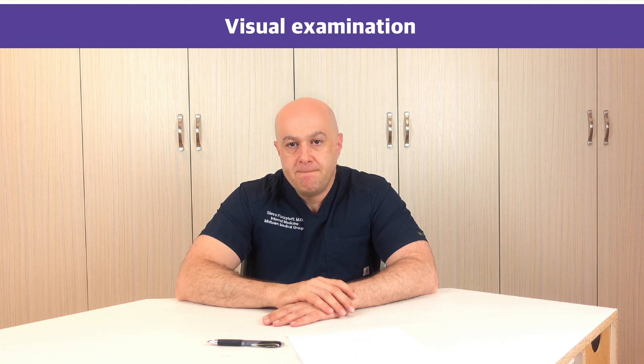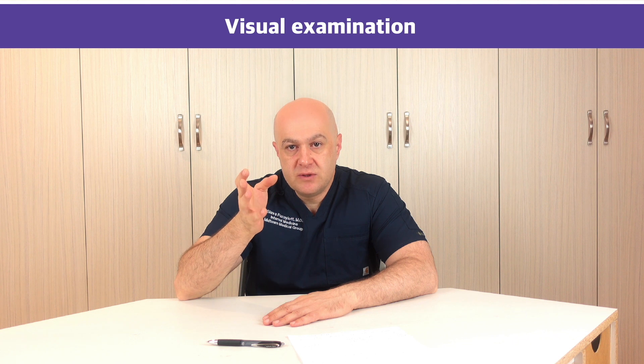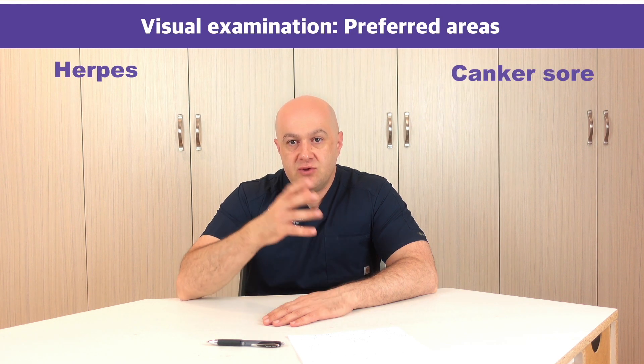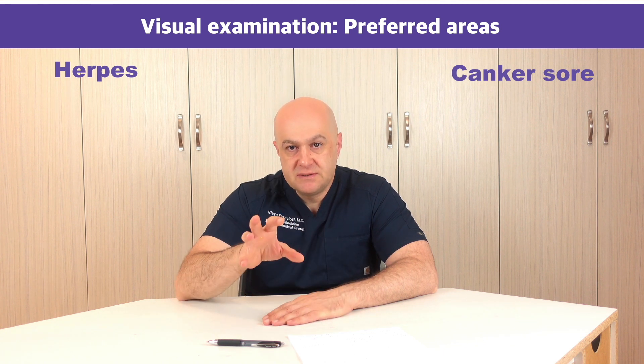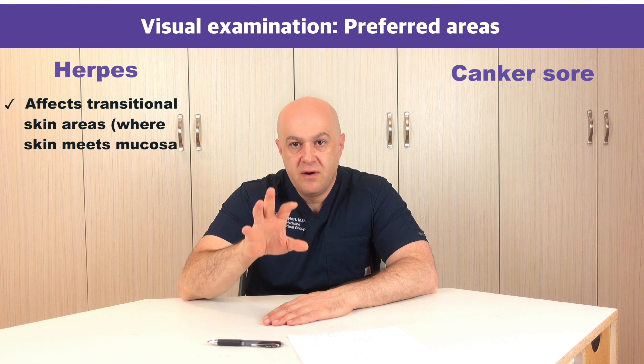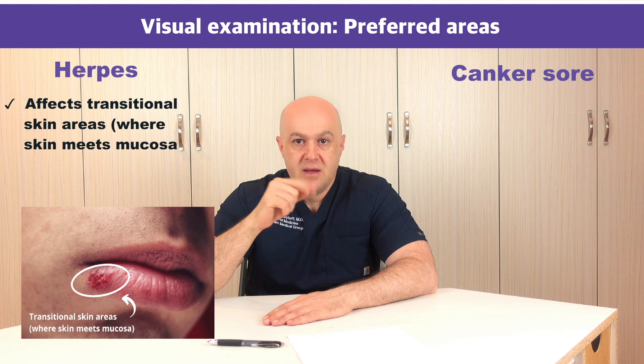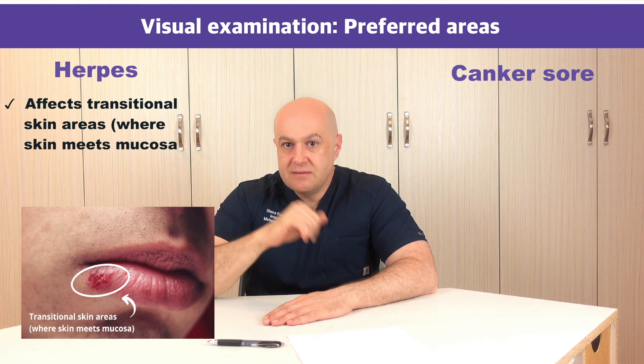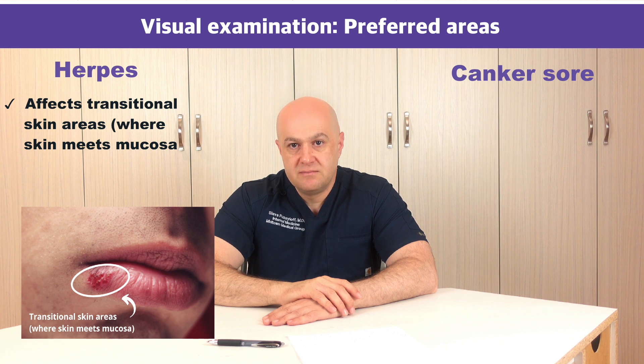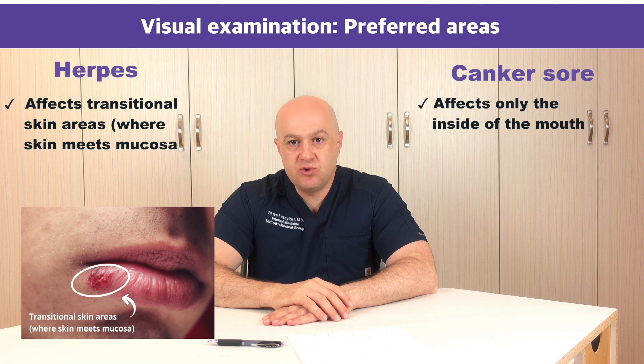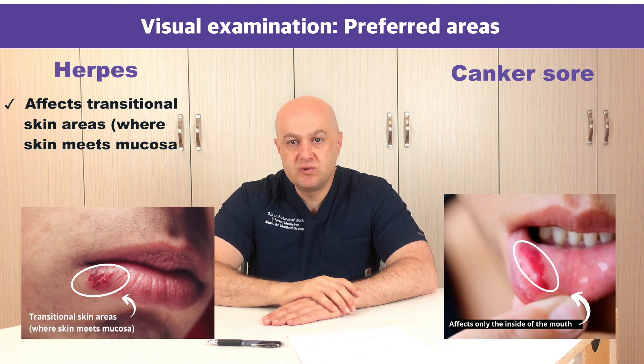In the visual exam of the sore, we can differentiate visually between canker sore and herpes. As mentioned, 70% of the diagnosis comes from visual examination. When we start the visual examination we have to pay attention to the area affected. Herpes, unlike canker sore, prefers to affect the transitional area — where the skin turns into the mucosa — so it's usually outside of the mouth. Canker sore usually affects the inside of the mouth mucosa itself.